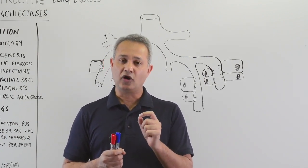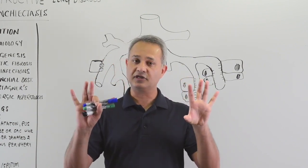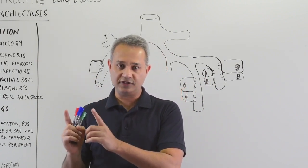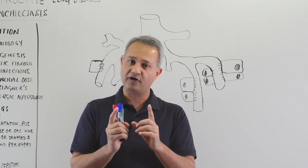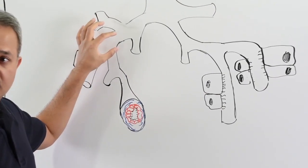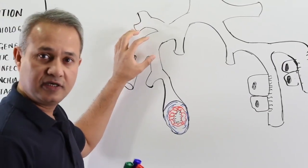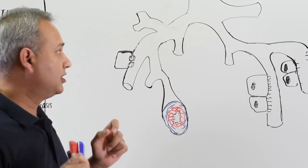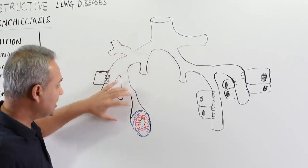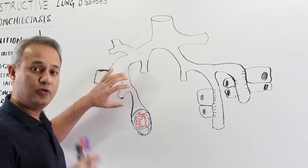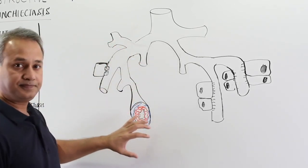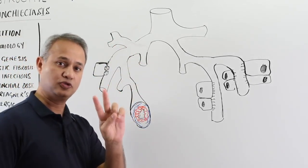This is an irreversible disease and normally obstruction and infection are present together. It is possible that infection appears first, causing pus formation which results in obstruction of the pathways due to the pus or inflammatory exudate, causing bronchiectasis. Or it is possible that obstruction appears first, leading to stagnation of the airways which causes infection, inflammation, and destruction. But these two things — obstruction and infection — are always present together.